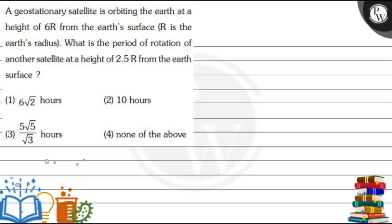Hello, let's read the question. A geostationary satellite is orbiting the Earth at a height of 6R from the Earth's surface, where R is the Earth's radius. What is the period of rotation of another satellite at a height of 2.5R from the Earth's surface?